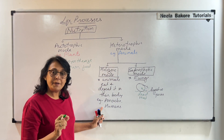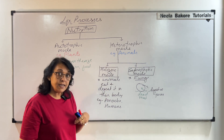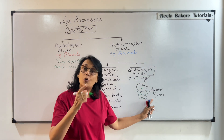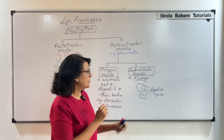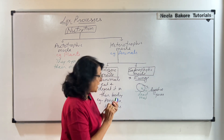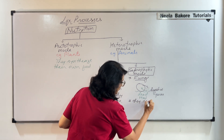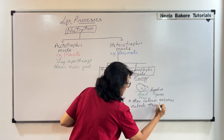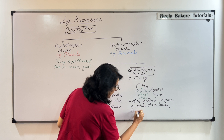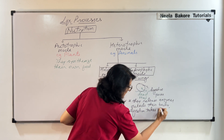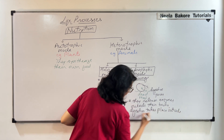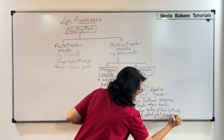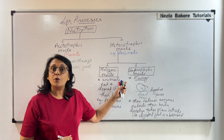In holozoic nutrition, we eat and digestion takes place inside our body — the digestive juices are secreted inside our stomach and intestine. Whereas in saprophytic nutrition, fungi release enzymes outside their body, digestion takes place outside the body, and the digested food is then absorbed.